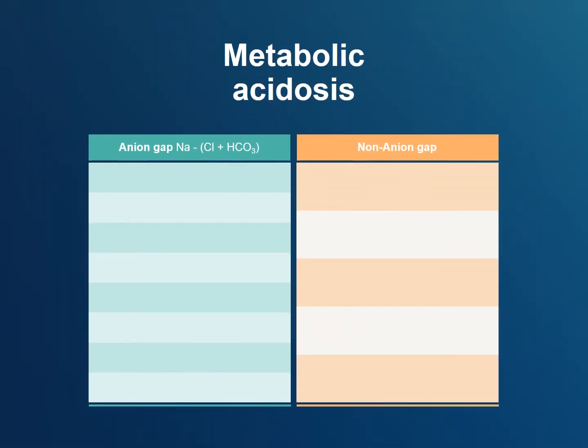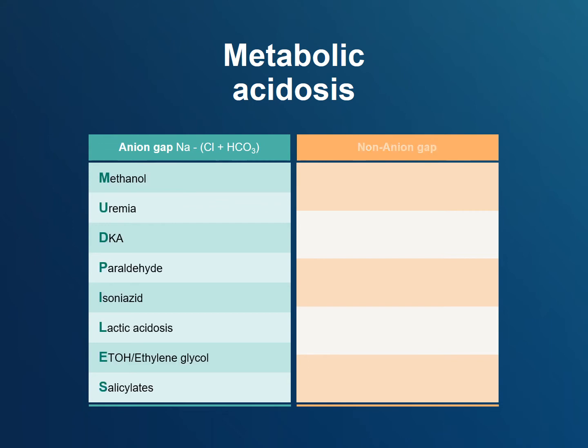After diagnosing metabolic acidosis, your next question should be: is it an anion gap or non-anion gap metabolic acidosis? An anion gap metabolic acidosis is due to the presence of unmeasured anions, due to excess acid produced by the body or toxic ingestion of an acid load. The most common causes of a high anion gap metabolic acidosis are diabetic ketoacidosis, lactic acidosis, renal failure, and toxic ingestions.